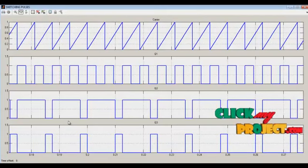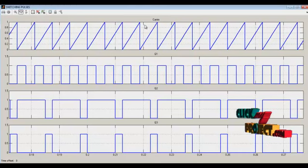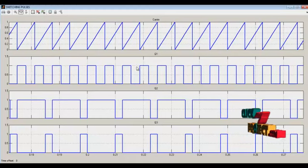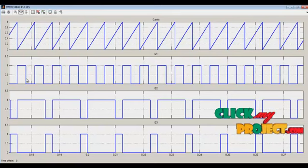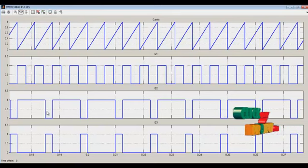These are the corresponding switching pulses of the entire circuit. The first one is the carrier, then Q1 switch. Q2 and Q3 are complementary switches, so this is inverted to Q3. Q1's one cycle is based on Q2. This is the maximum amplitude level of Q1 and Q2.